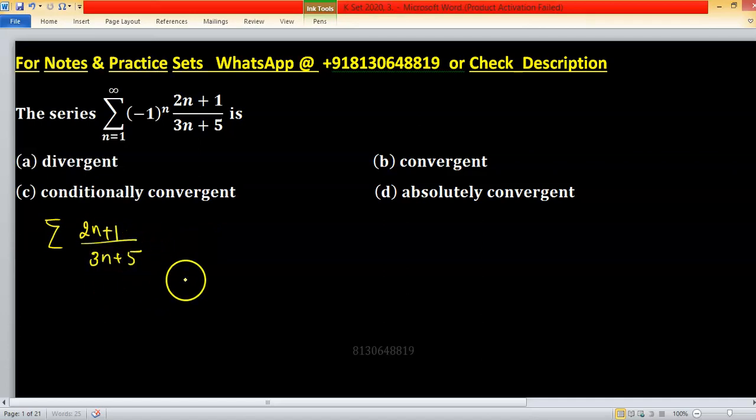If absolutely convergent, then limit of this one must be 0. But we are getting limit 2 upon 3. Limit of 2n plus 1 upon 3n plus 5 equals to 2 upon 3.